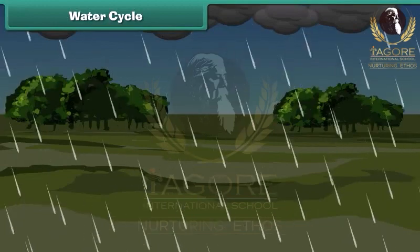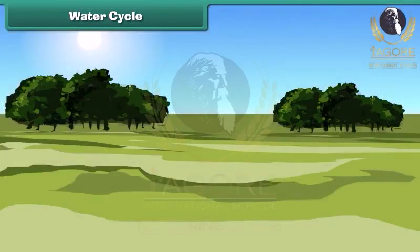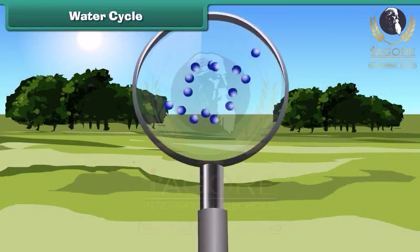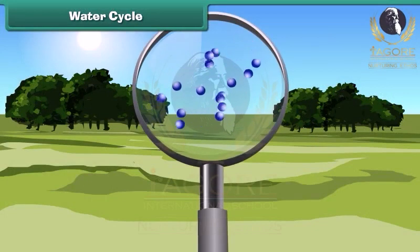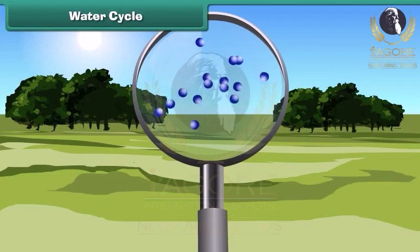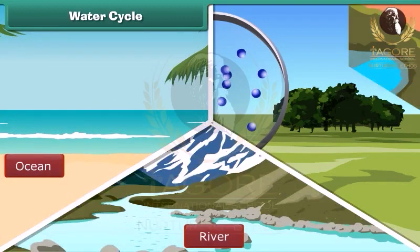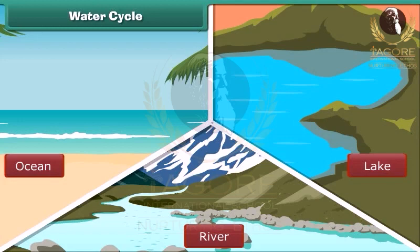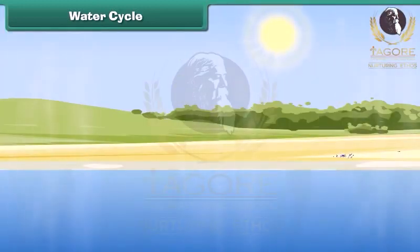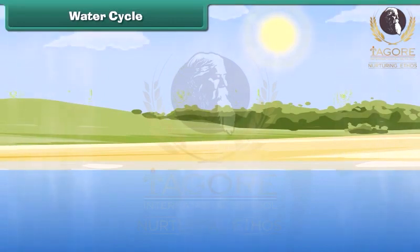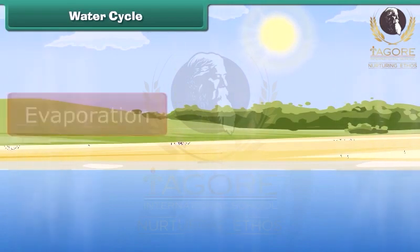Have you ever wondered where does all the water in rain come from? There is always a certain amount of water vapor in the atmosphere. It comes from the earth's surface water like oceans, rivers and lakes. The heat of the sun heats up the water from the surface of these reservoirs and changes water from the liquid state to the gaseous state. This is called evaporation.